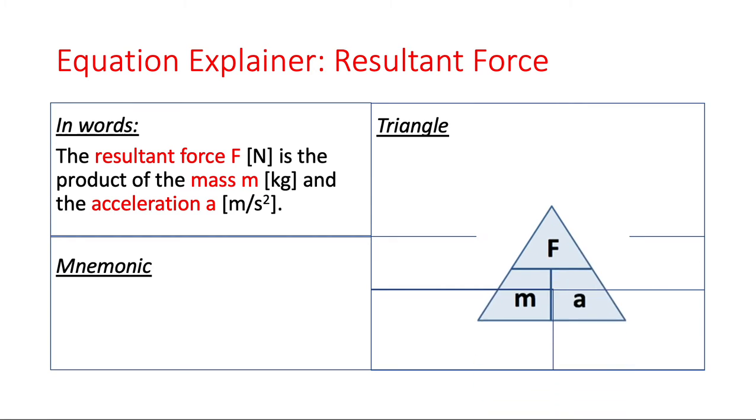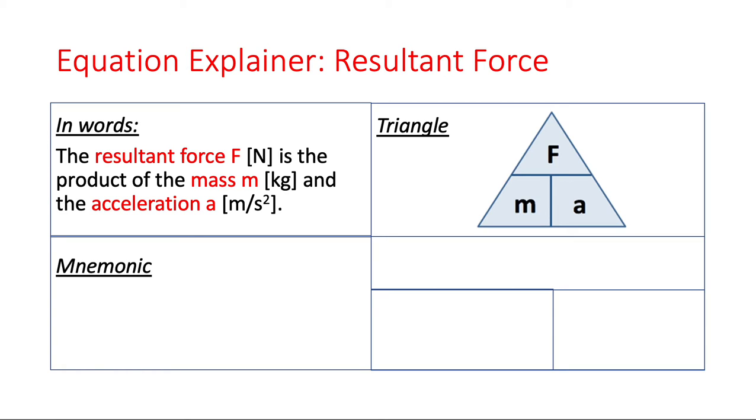We should be familiar with this triangle, the force mass acceleration triangle. Force on the top is the product of mass and acceleration. So we can write this in three ways: F equals ma, m equals F divided by a, and a equals F over m. What I would encourage you to do is remember the top one, F equals ma, because the other ones come from there. There's no need to remember three equations. We want to try and remember F equals ma. How might we do that?